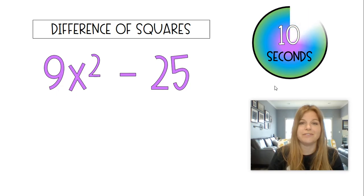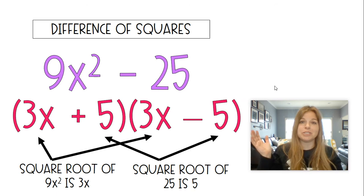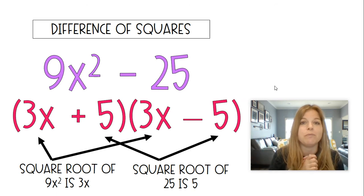9x squared minus 25. And time's up. 3x plus 5, 3x minus 5. Thank you so much for joining me on this video. I hope this was helpful for you.